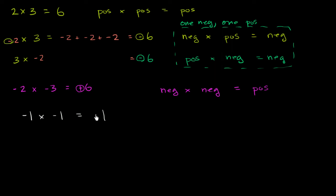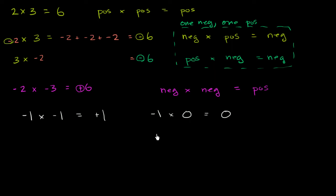What happens if I did negative 1 times 0? Now this might seem like it doesn't fit into any of these circumstances, since 0 is neither positive nor negative. But here you just have to remember: anything times 0 is going to be 0. So negative 1 times 0 is going to be 0. Or I could have said 0 times negative 783 — that is also going to be 0.